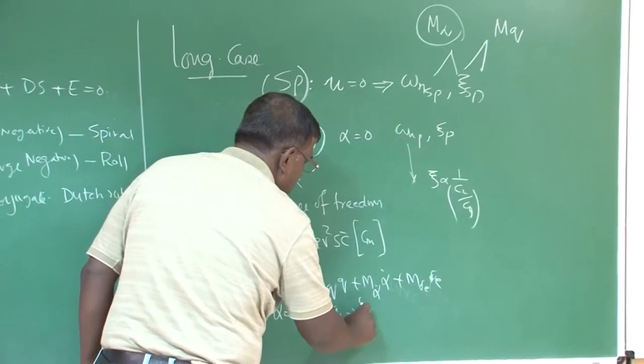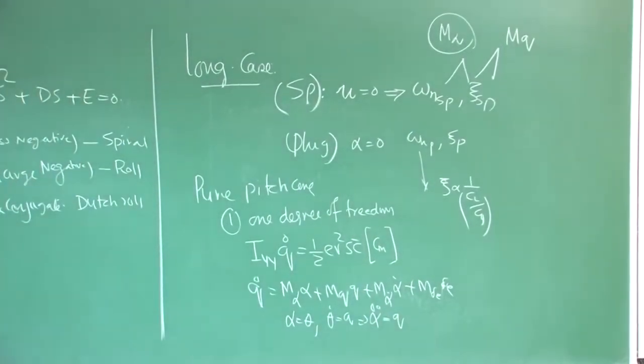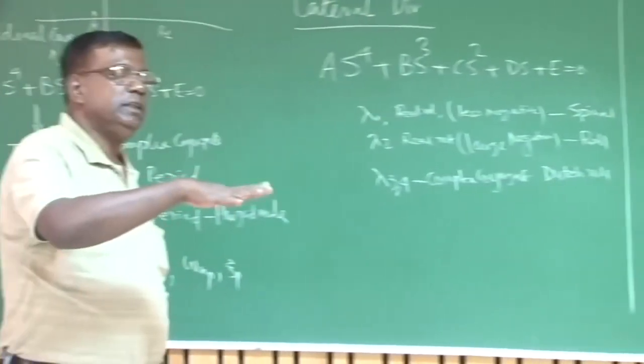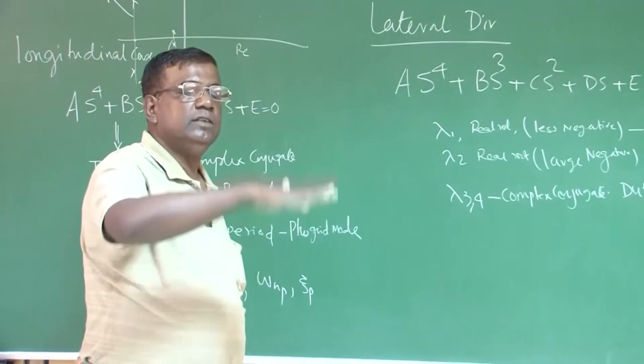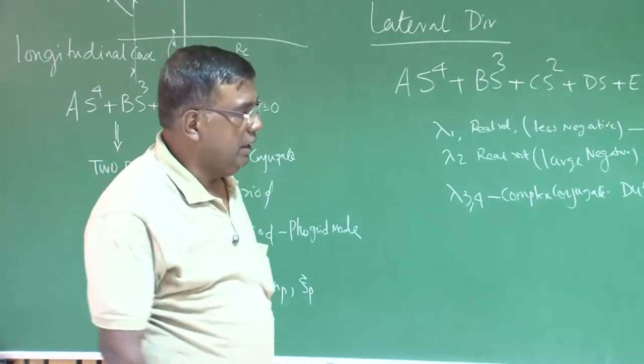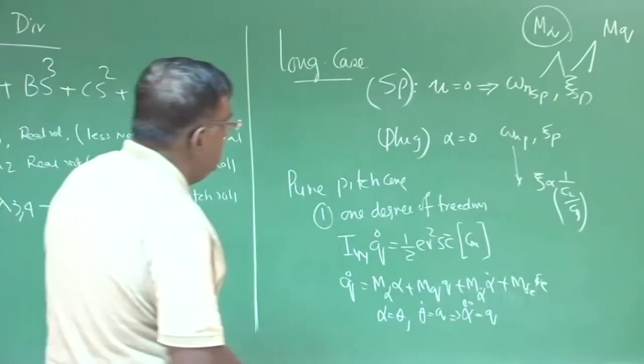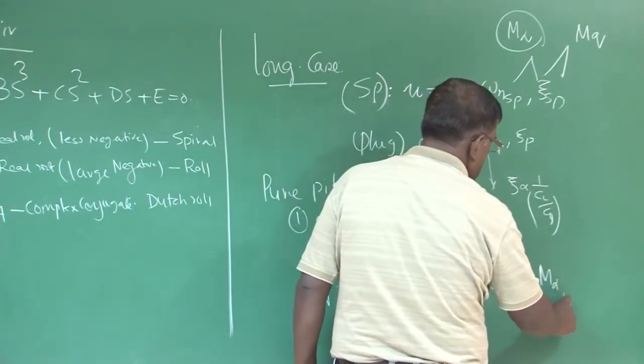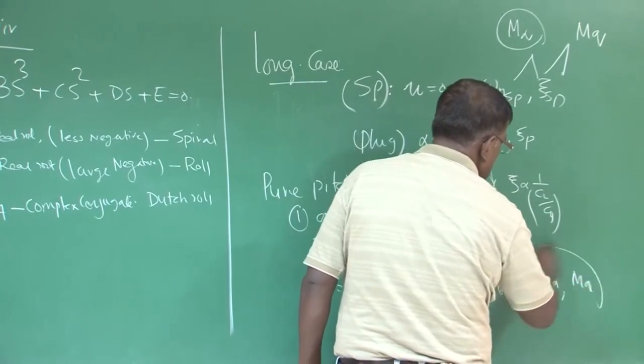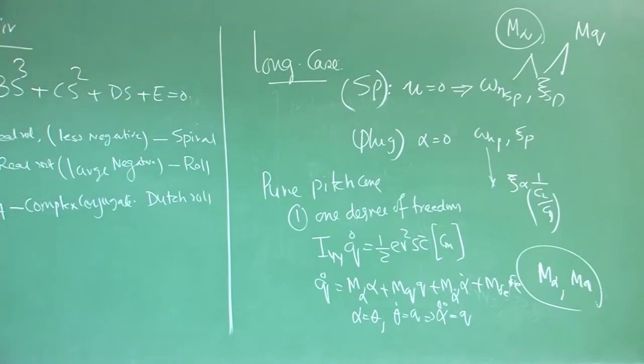So we wrote like this: q dot equal to M_alpha into alpha, M_q into q, M_alpha_dot into alpha dot plus M_delta_e into delta_e. And we put an approximation that alpha equal to theta and theta dot equal to q, this implies alpha double dot equal to q dot. This is typically when you are only pure pitching. The airplane, when pitches in atmosphere, it not only does this, because angle of attack is changing. So there will be a motion in vertical direction as well.